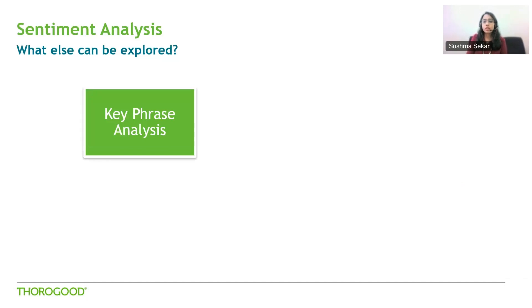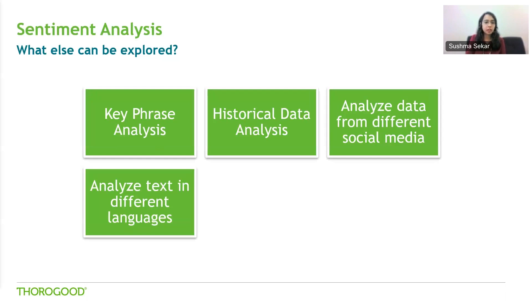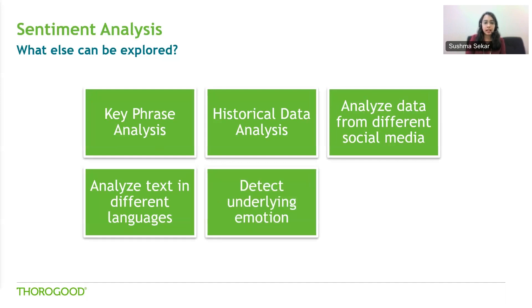So what else can we explore? You can do key phrase analysis to understand what contributes to the sentiment — for example, a user may have tweeted that they like the mint flavor and freshness of toothpaste A but not toothpaste B, helping you understand what's working or not. You can compare data from a few years ago versus now, ingest data from other social media platforms, analyze text in different languages, and also try to detect the underlying emotion — whether users are angry, fearful, or surprised — to understand reasons for sentiment and how to address it.